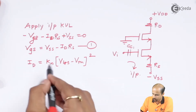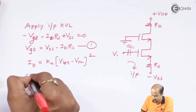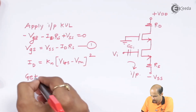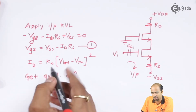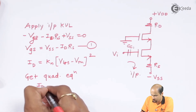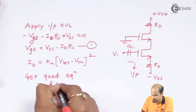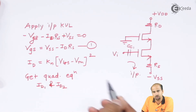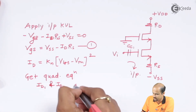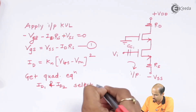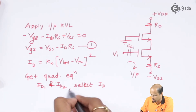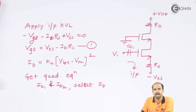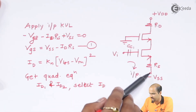From the quadratic equation, we get two solutions: ID1 and ID2. Out of ID1 and ID2, we select the valid ID (the physically meaningful positive solution). Once we get ID, we know this drain current is the same through both transistors in the cascode stack.